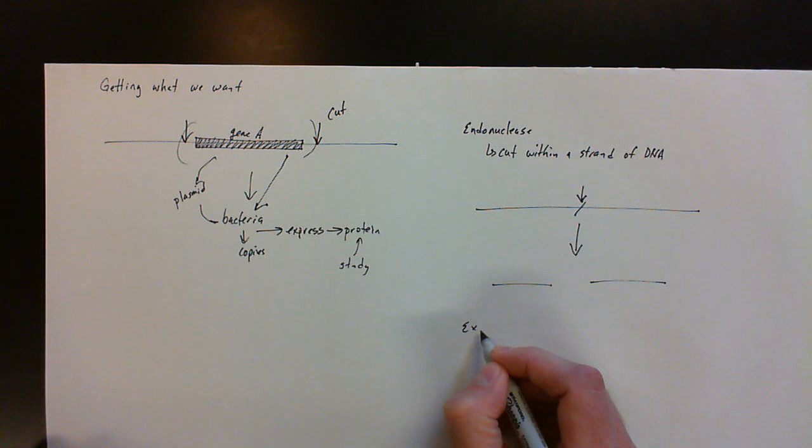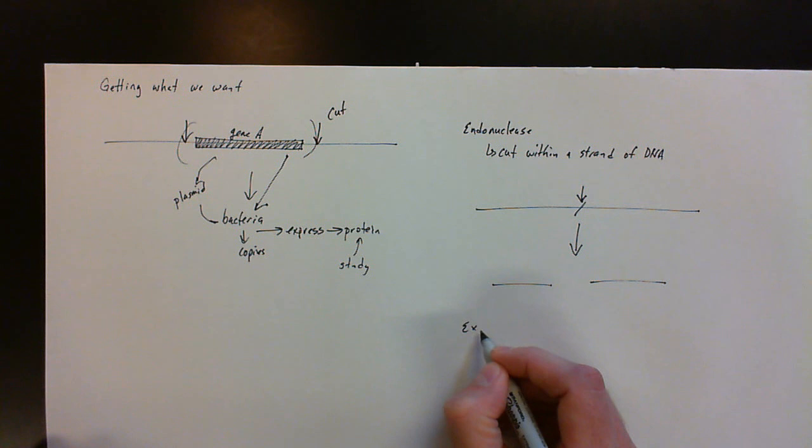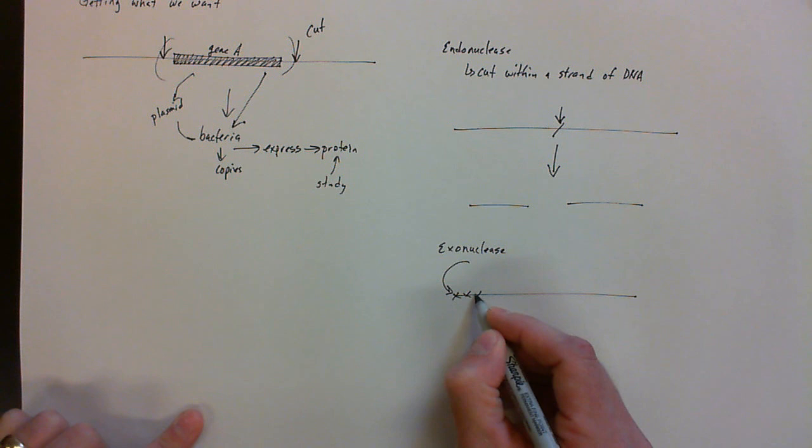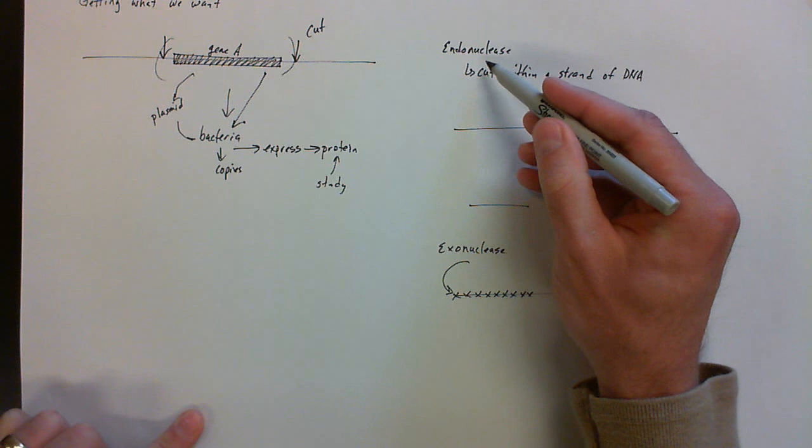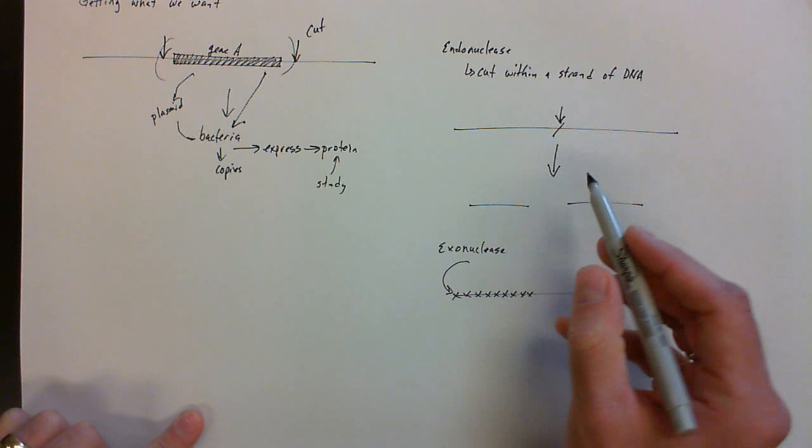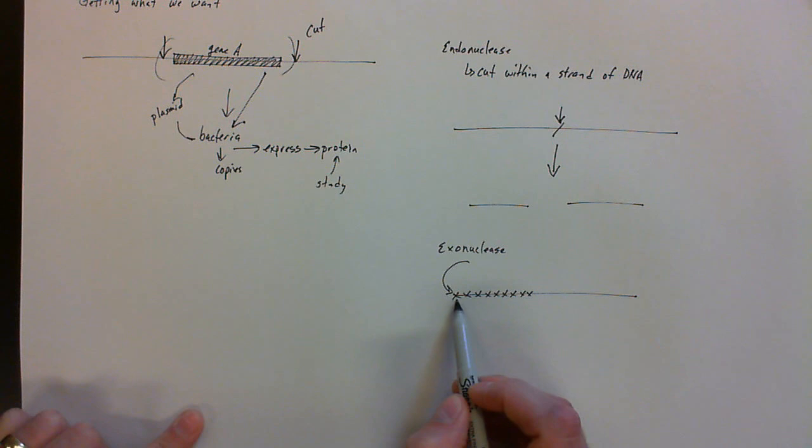An exonuclease, if I draw what an exonuclease is, if I've got one strand it's going to act on the end and chew it away nucleotide by nucleotide. So both of these types are actually found in cells, endonucleases and exonucleases. So once again an endonuclease is going to cut within a strand so it can cut between the two double strands and it will lead to two strands if I cut once. An exonuclease is different, it's going to start from an end and then start to chew it away.